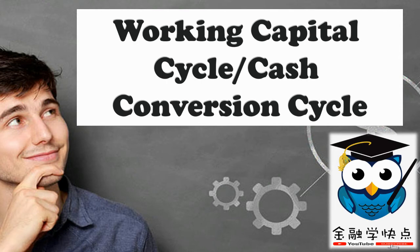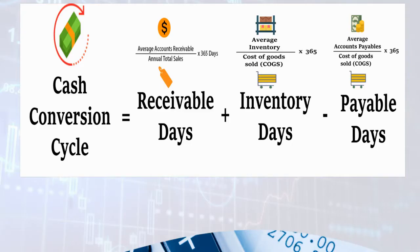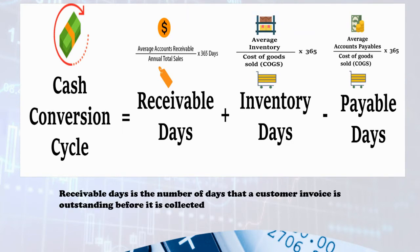The period between when you pay cash and receive cash is what we call the working capital cycle. You can also tell why we call it the cash conversion cycle — both terms have the same meaning. In the next slide, I'm going to share the formula: cash conversion cycle equals receivable days plus inventory days minus payable days. We are going to talk about each component one by one.